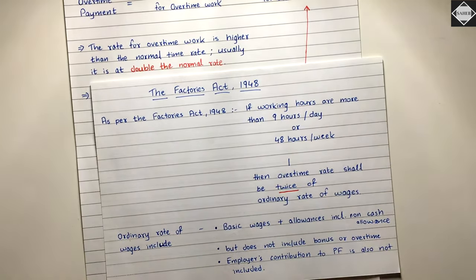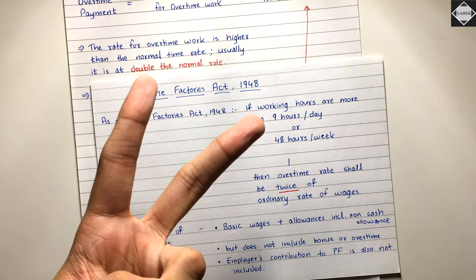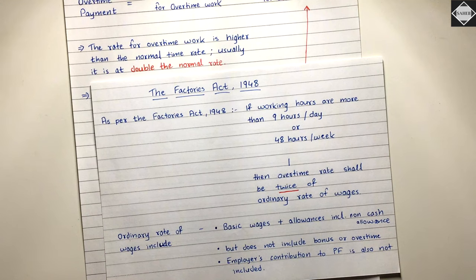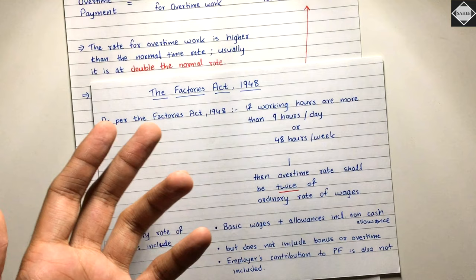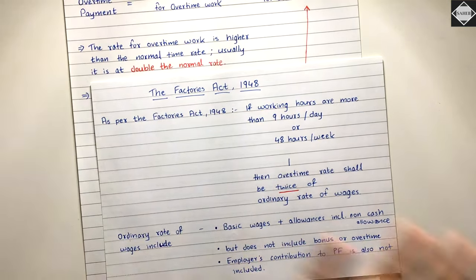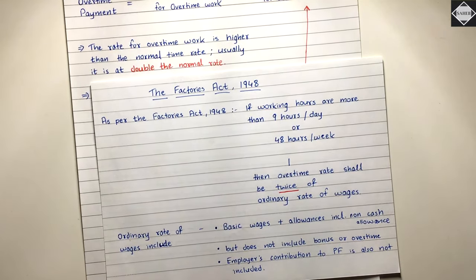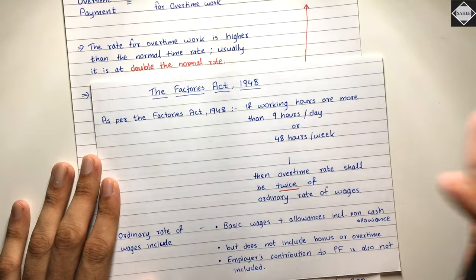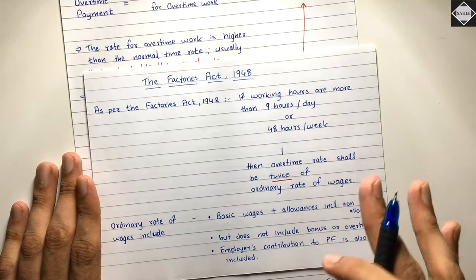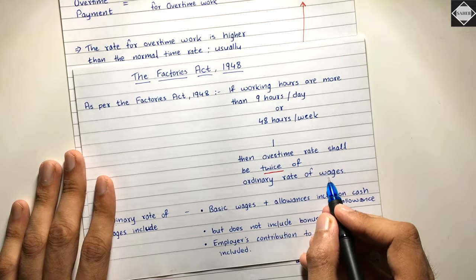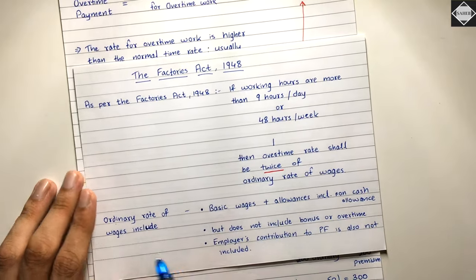For example, if a worker earns 100 rupees per hour and does overtime, the minimum overtime rate must be 200 rupees per hour — double the normal rate. The company can pay 2.5x or 3x, but it cannot go below 2x as per the Factories Act. In exam questions, they may not follow the Factories Act and instead use the company's policy, so solve according to whatever data is given.